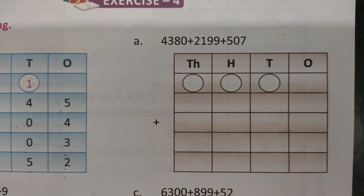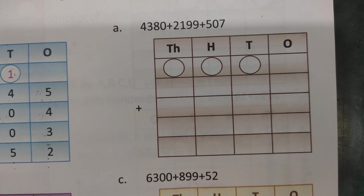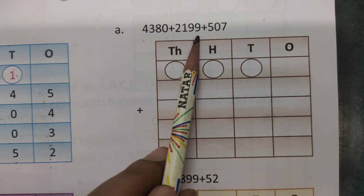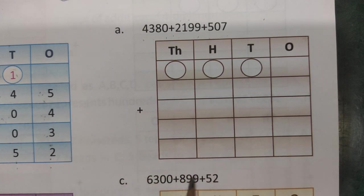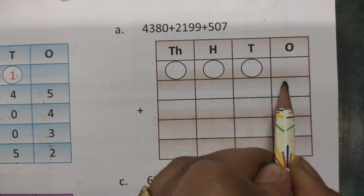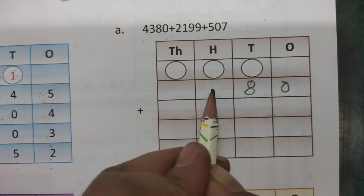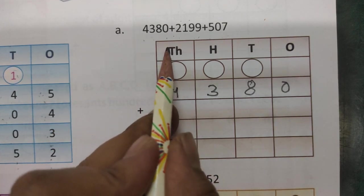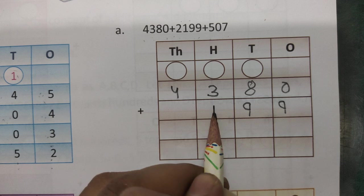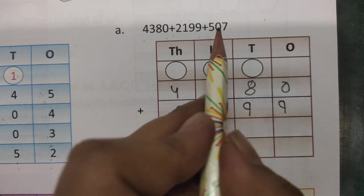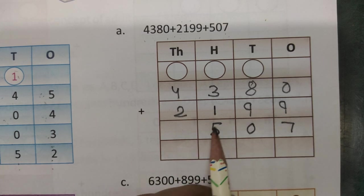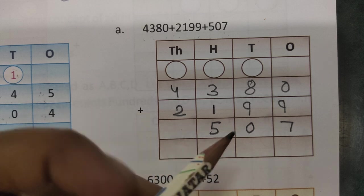Now second one is this question is 4380 and then 2199 and 507. Set the position is 1, 10, 100 and 1000. 0 is 1 place, 8 is 10 place, 3 is 100 place and 4 is 1000 place. Then 9 is 1 place, 9 is 10 place, 1 is 100 place and 2 is 1000 place. The next one is 7 is 1 place, 0 is 10 place and 5 is 100 place.